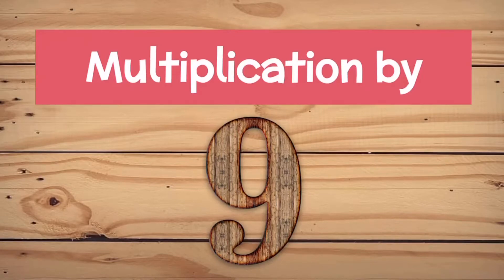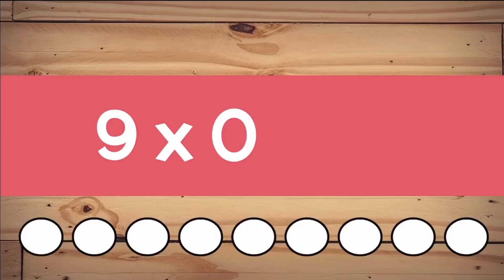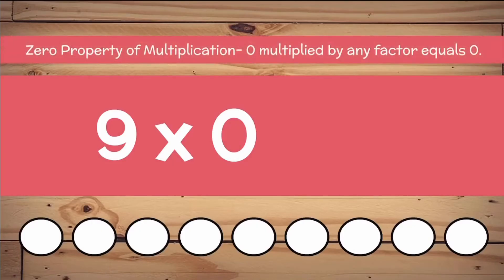Welcome back, Math Grizz! Today we will use a trick to multiply by 9. The trick doesn't work for 9 times 0, but we know that 9 times 0 equals 0 because of the zero property of multiplication.